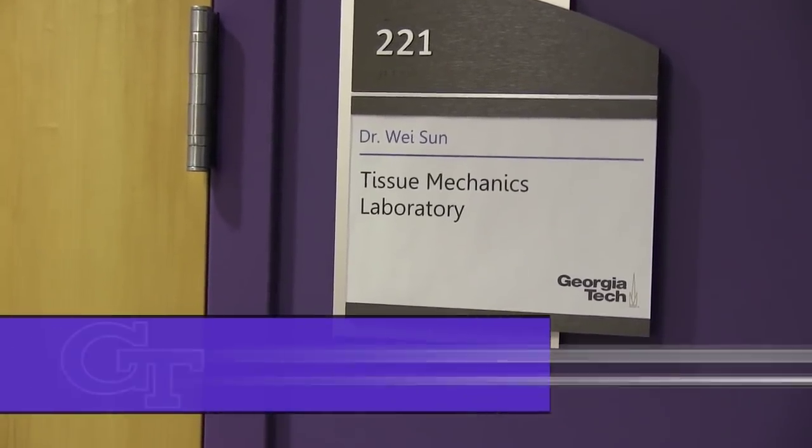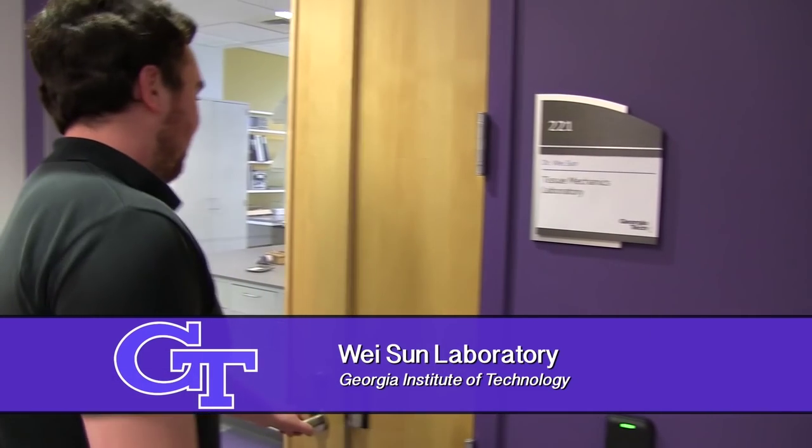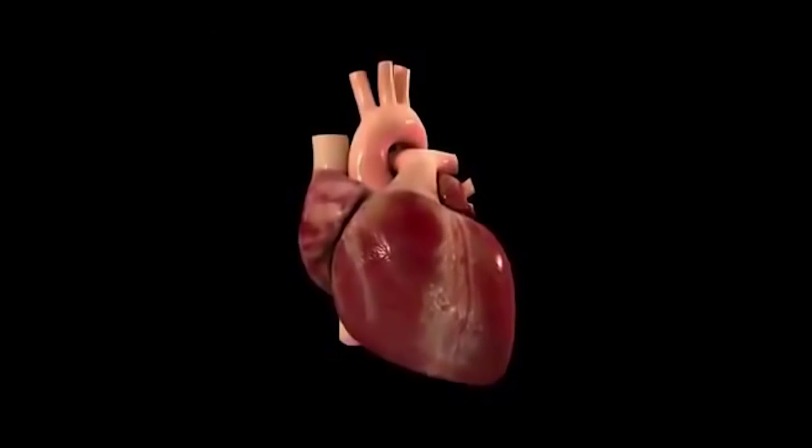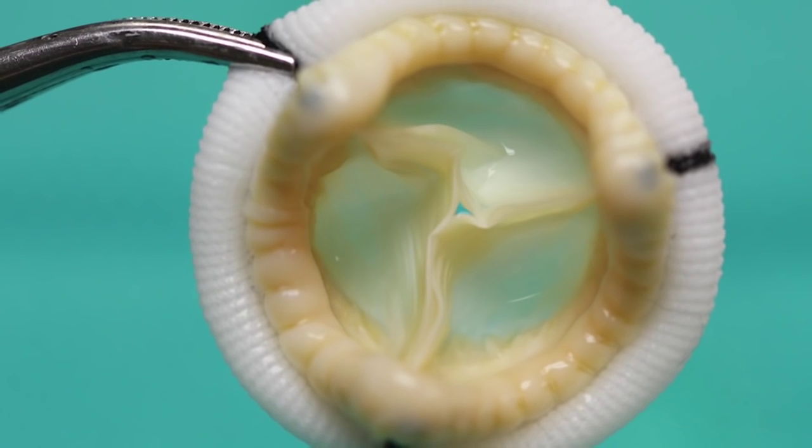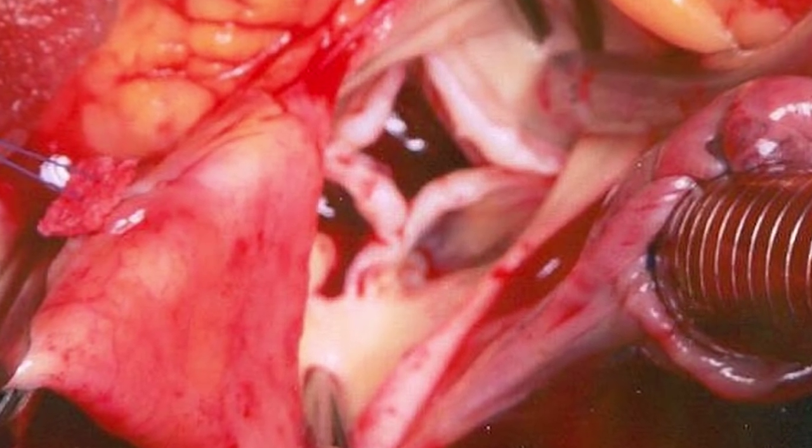My name is Kyle Murdock and I'm a graduate student in Dr. Wei Sun's tissue mechanics lab here at Georgia Tech. I study the aortic valve and materials that are used to replace it. Right now I'm studying the bending behavior of cow tissue, which is used as a replacement valve material.